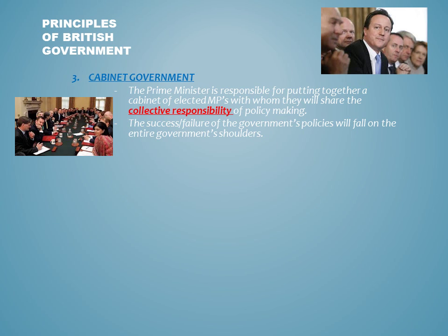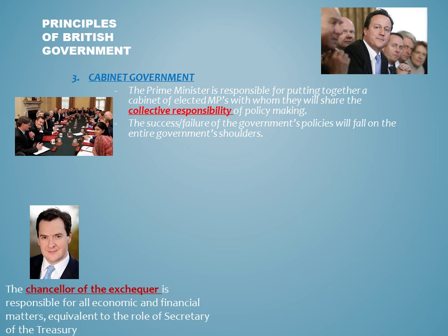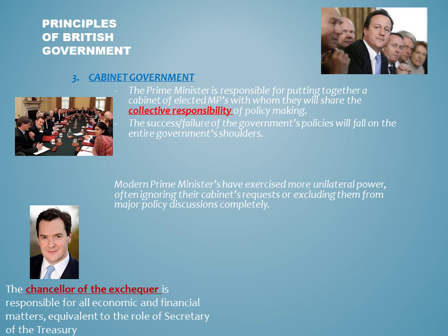The third principle of British democracy is that of the concept of cabinet government. With cabinet government, the Prime Minister is responsible for putting together a cabinet of other elected MPs whom they will share a collective responsibility in policymaking. The Prime Minister and his or her cabinet are a policymaking team where the success or failure of policies holds a group responsibility. One of the more prominent positions within the cabinet of the UK is that of the Chancellor of the Exchequer, who is responsible for the nation's treasury. Modern Prime Ministers have challenged cabinet government, however, as they've taken on more unilateral power, oftentimes ignoring their cabinet's requests or excluding them from policymaking decisions completely.